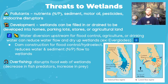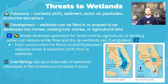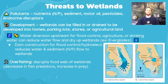Overfishing is another impact to consider. If we overfish wetlands, we disrupt the food web, creating predator-prey imbalances that can destabilize the entire ecosystem.